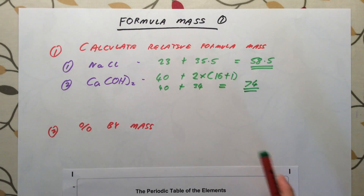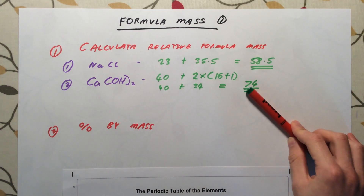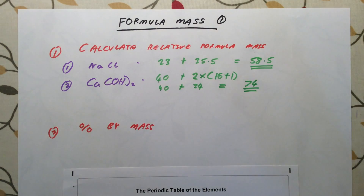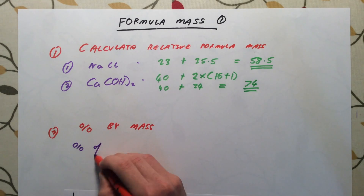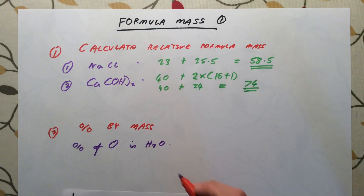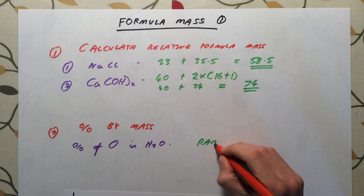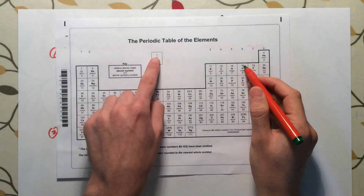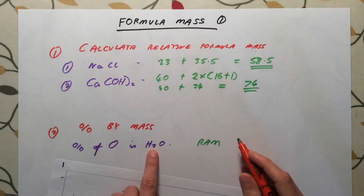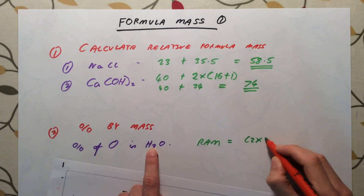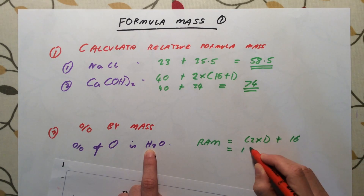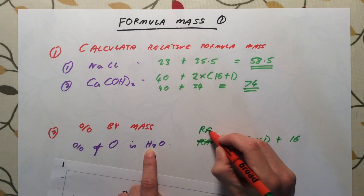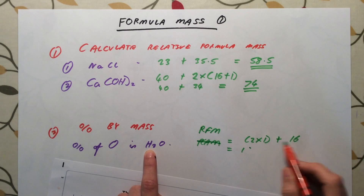Percentage by mass uses the relative formula masses we've calculated. We need to work out the percentage that a particular element contributes to the overall mass. First example: H₂O, and we want the percentage by mass of oxygen. We start by calculating the relative formula mass of H₂O. Oxygen has an atomic mass of 16, hydrogen is 1, and we've got two hydrogens, so we do 2 times 1 plus 16. The relative formula mass of H₂O is 18.